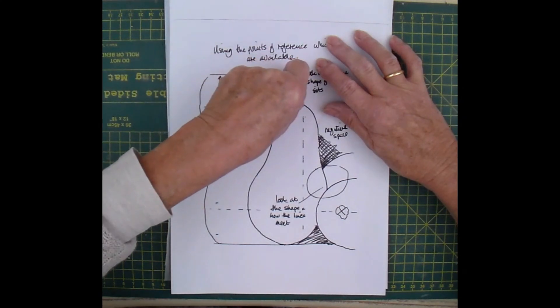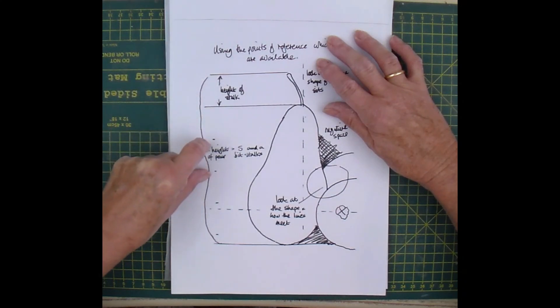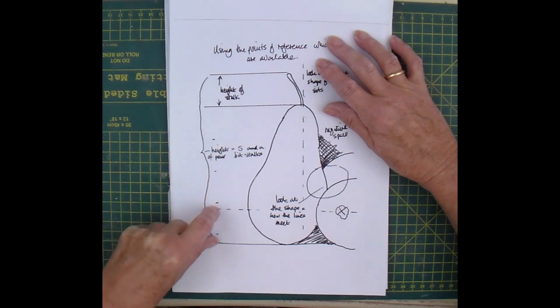Now, if you were to take the stalk as a measurement, you could then go one, two, three, four, five.